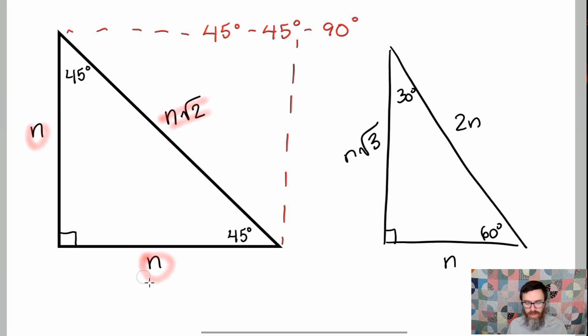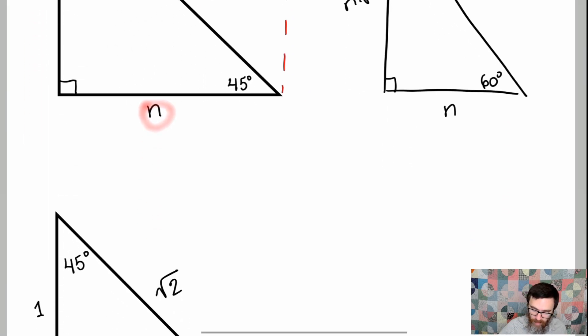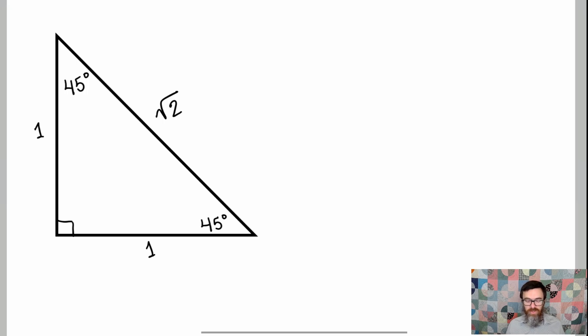Now, like we did before, suppose that n is equal to 1. What does that give me? It gives me this triangle right here. So you have the two side lengths of 1, you have the hypotenuse being the square root of 2, and you see that when you use the Pythagorean theorem it all works out.